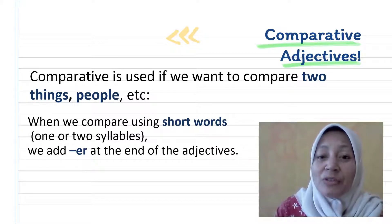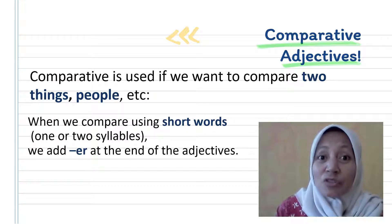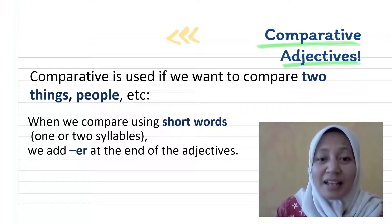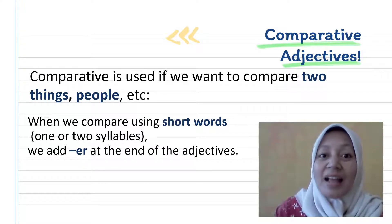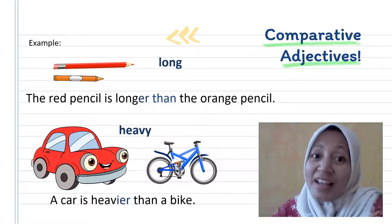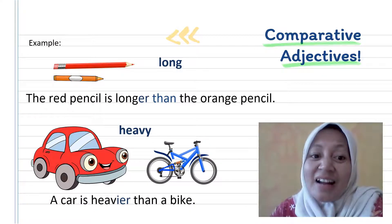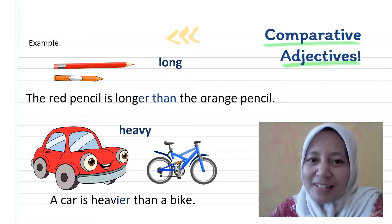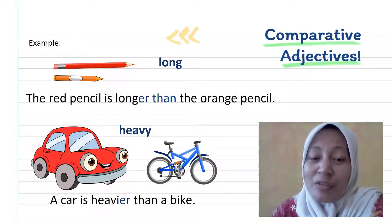When we compare using short words — adjectives with one or two syllables — we just add -er at the end of the adjective. Let's see the example. I have two pencils: a red pencil and an orange pencil. We are going to talk about the length of the pencils, so we will use the word 'long.'